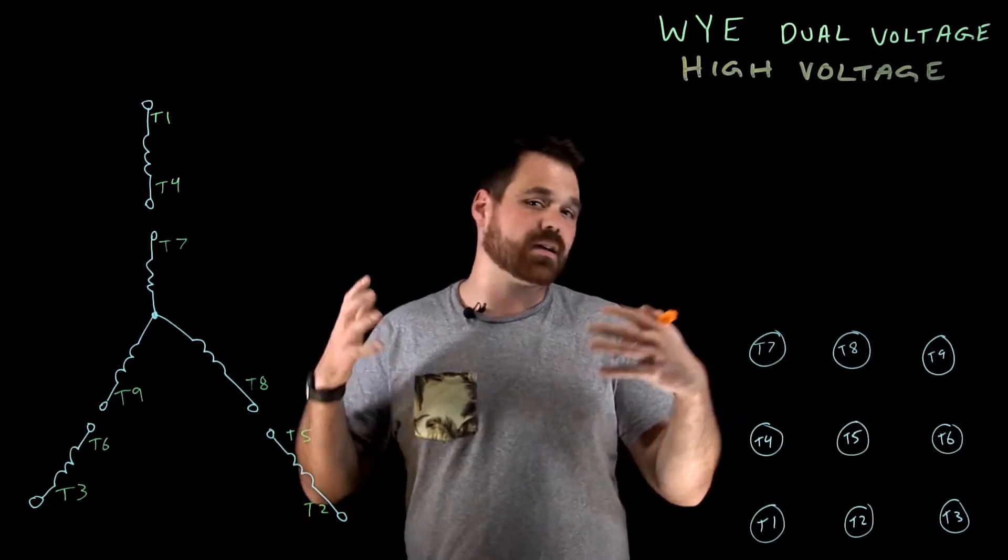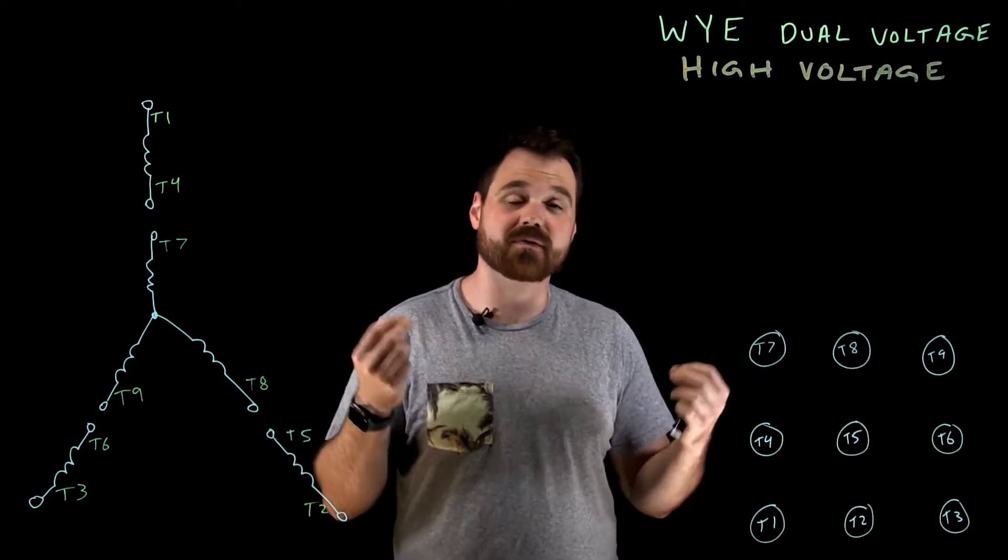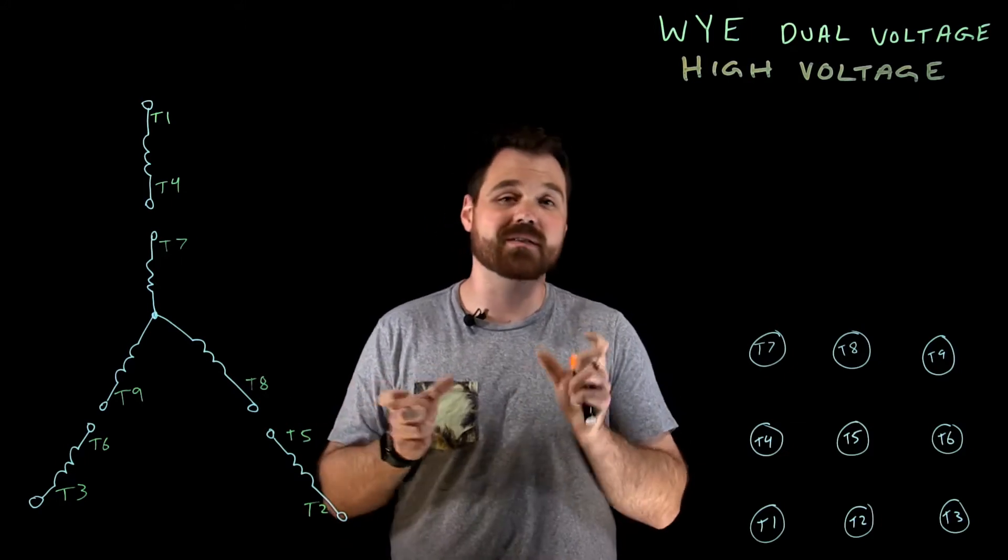Let's say hypothetically, we're talking a 230, 460 volt motor, which is good for a nominal voltage of 240 or 480 volts.